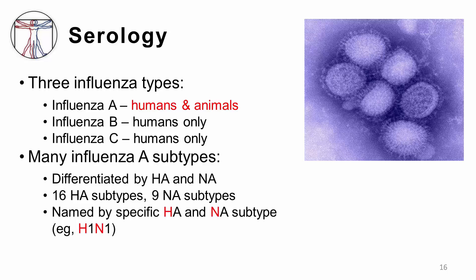Within the subgroup of influenza A, there are many subtypes, separated by their differences in hemagglutinin and neuraminidase. Sixteen different subtypes of hemagglutinin and nine different subtypes of neuraminidase have been described. Influenza A subtypes are named by their specific combinations of hemagglutinin and neuraminidase, such as H1N1. At this point, you might be wondering, if humans are able to develop protective antibodies against hemagglutinin and neuraminidase, why do we continue to have yearly epidemics of influenza?